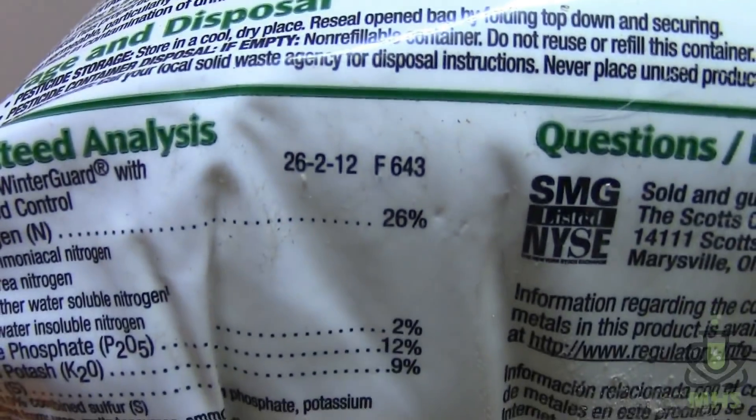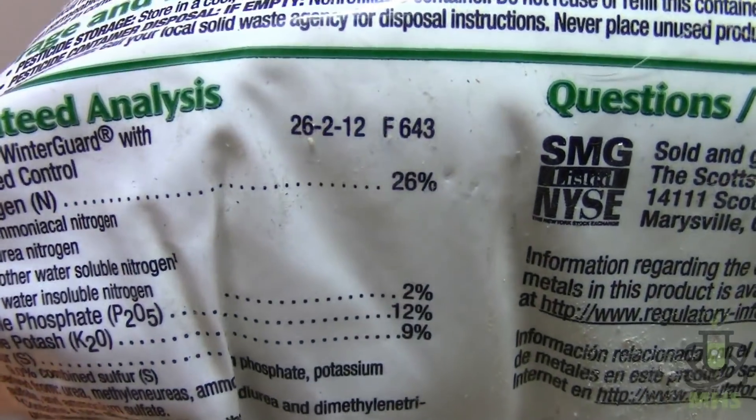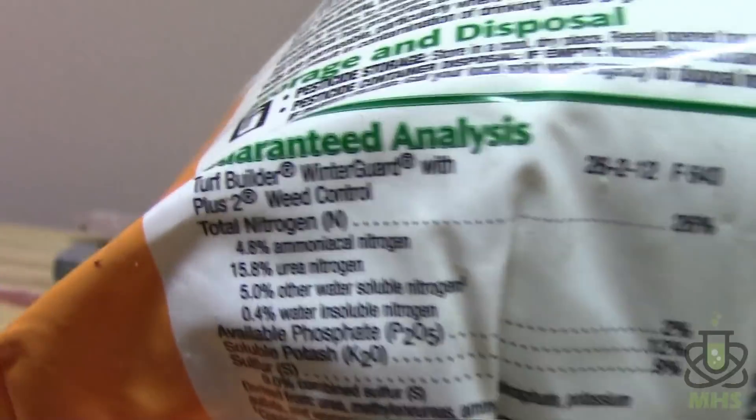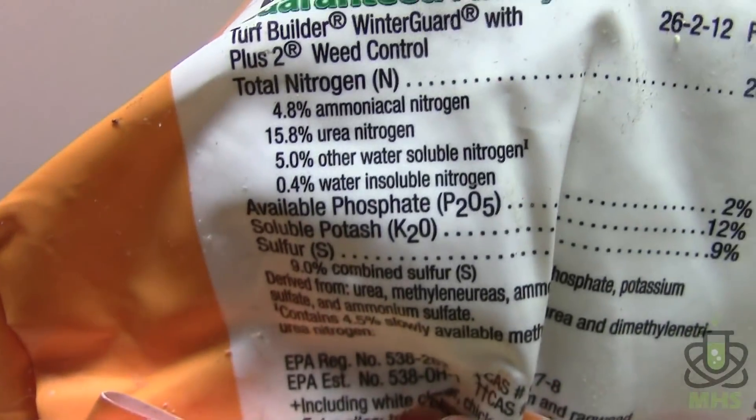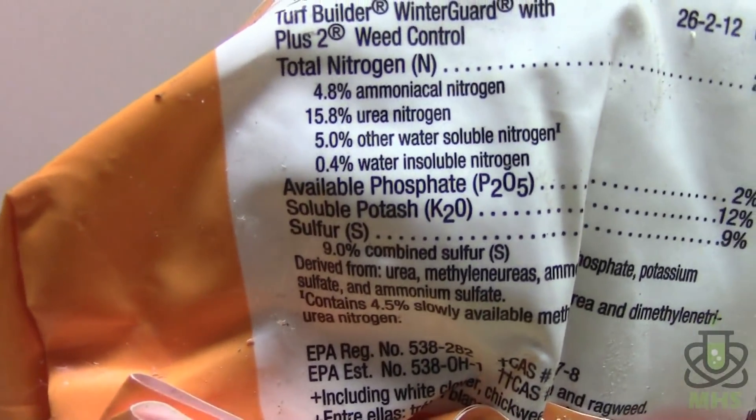Usually they'll have this number as well, this 26-21-2 that's called an NPK number, N being for nitrogen, P for phosphorus, and K for potassium.